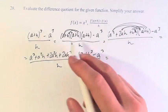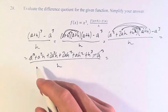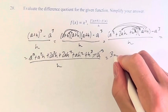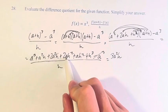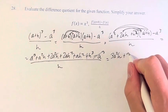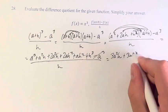So we have a cubed minus a cubed, so these cancel out. a squared h plus another 2 a squared h is 3 a squared h. 2 a h squared plus a h squared is another 3 a h squared. And then plus h cubed.